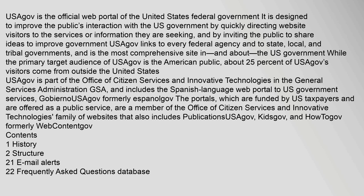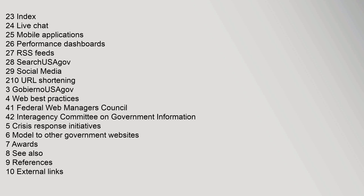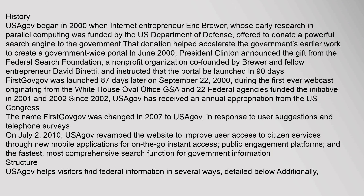and HowToGov, formerly WebContentGov. Contents include: History, Structure, Email Alerts, Frequently Asked Questions Database, Index, Live Chat, Mobile Applications, Performance Dashboards, RSS Feeds, SearchUSAGov, Social Media, URL Shortening, GobiernoSaGov, Web Best Practices, Federal Web Managers Council, Interagency Committee on Government Information, Crisis Response Initiatives, Model to Other Government Websites, Awards, See Also, References, and External Links.